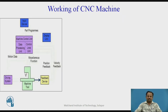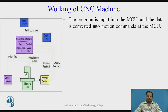Now we will see the working of a CNC machine — how it works. The components of this particular machine are: input device, machine control unit (MCU), display unit, driving system, machine tool, and feedback device.